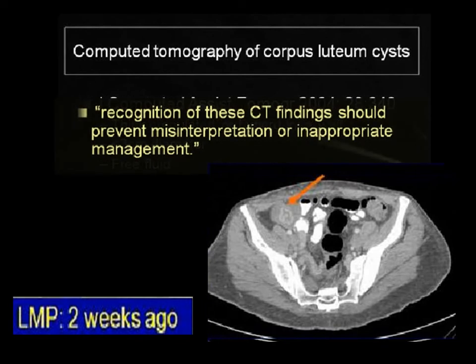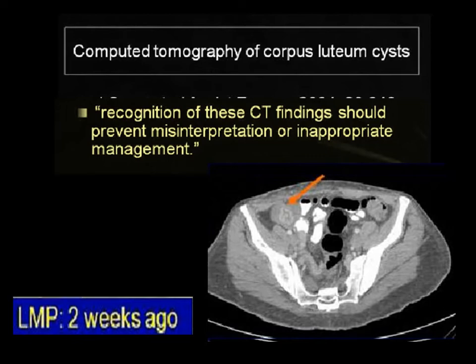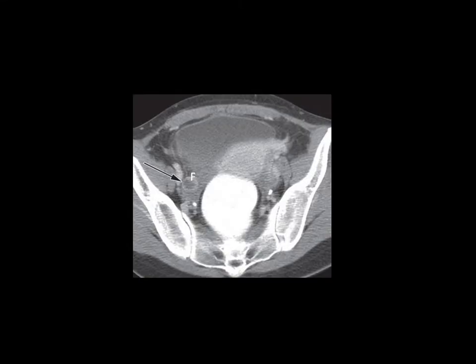Recognition of corpus luteum cysts on CT prevents misinterpretation or inappropriate management. Someone might call this an abscess because of the thick enhancing wall and small free pelvic fluid, but you should remember corpus luteum cysts have this appearance and do not need any intervention — they resolve by themselves. On CT you can see a thick enhancing wall within the ovary confirming corpus luteum cyst.